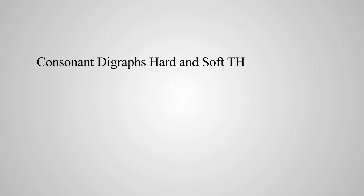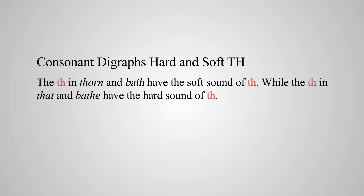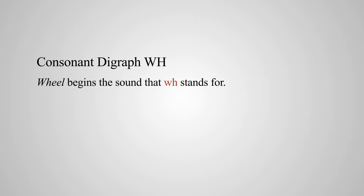Now let's turn to page 46. Of course, it couldn't be that simple — each consonant digraph can either be hard or soft. The TH in thorn and bath have the soft sound of TH, while the TH in that and bathe have the hard sound of TH. Say each word twice so you can hear the difference. The first one is thumb — underline the TH, and that's soft. Then THIN, THEM, FATHER, and THOSE. You will be able to hear the hard and the soft.